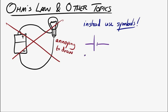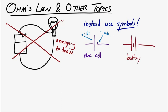For instance, an electrical cell we usually represent like this. The long side would be the positive terminal and the short side is the negative terminal. A battery — it turns out a battery is just a combination of cells. So this is how we represent a battery in a circuit: long side is the positive terminal, short side is the negative.